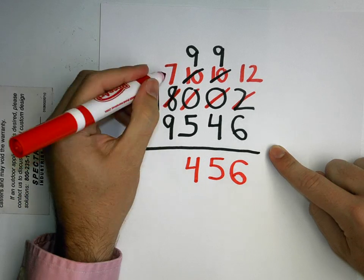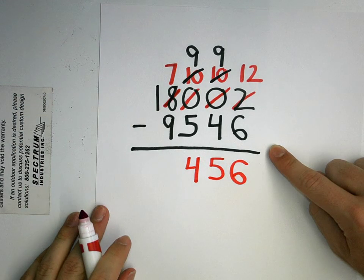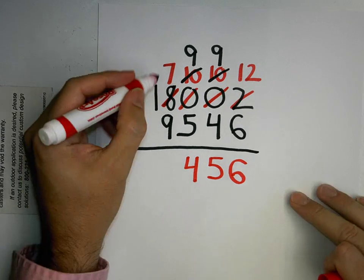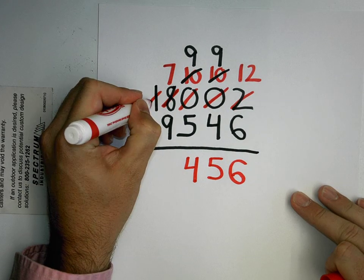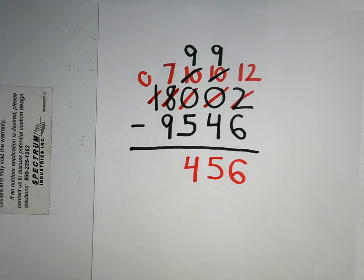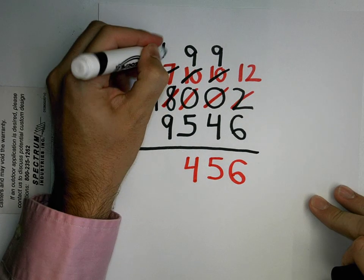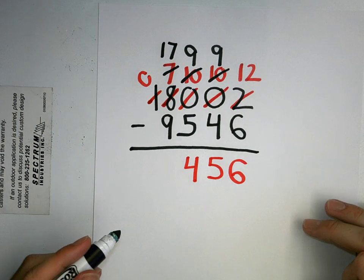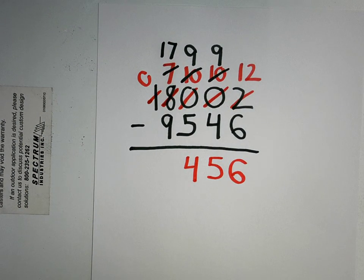But seven take away nine, can I do that? Not quite. So what I need to do, move my ten thousands, which is a zero, and instead of my seven thousand left, I now have seventeen thousand left. What's seventeen take away nine? It is eight.